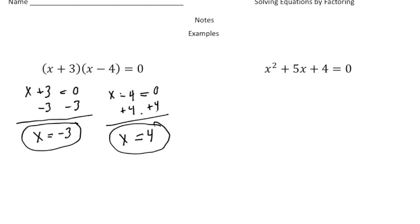Now let me show you why these are solutions. If I plug in negative 3 up here, well negative 3 plus 3 is 0. So no matter what I put over here — negative 3 take away 4 is negative 7 — but negative 7 times 0 is still going to give us 0. Same thing over here: if I plug in 4 for x, well 4 take away 4 is 0, so anything times 0 is going to always equal 0. So the goal is you always want to have each factor equal 0, and then you solve for the x value.